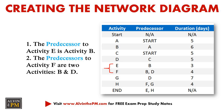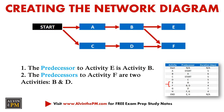And here's where it may get a little tricky. The predecessor to activity E is activity B, and the predecessors to activity F are two activities: B and D. Once we update our diagram with these two connections, we can see that we're starting to have multiple convergences into activity F — meaning activities B and D both feed into activity F.